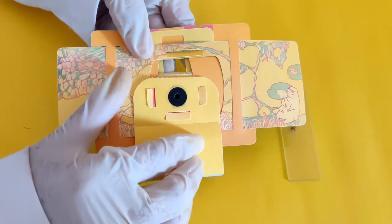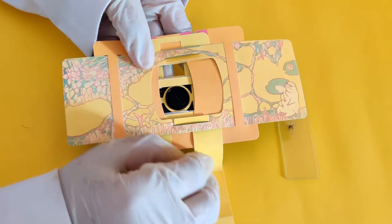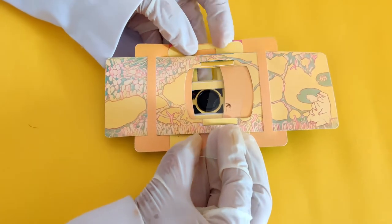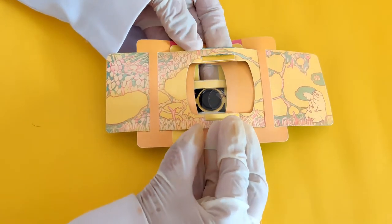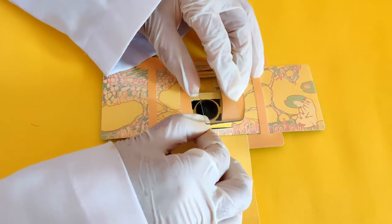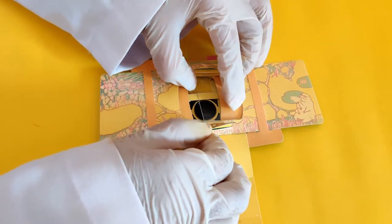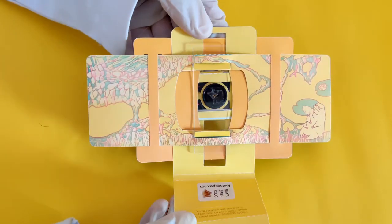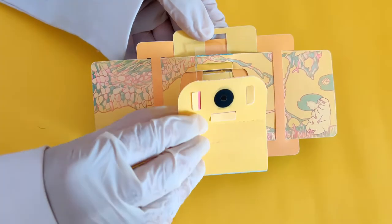Flip the foldscope to the yellow side and flip the glass slide such that the side where the sample is mounted is facing the lens in the foldscope. Insert the glass slide into the two slits in the sample stage of the foldscope. Close the flap of the lens stage of the foldscope.